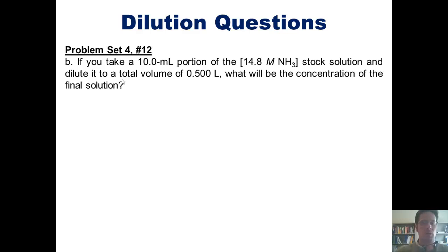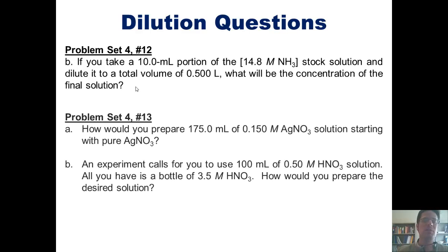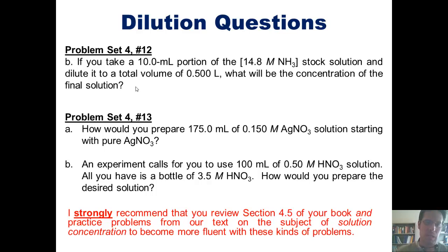This brings us back to our previously mentioned problem: if you took a 10 milliliter portion of a 14.8 molar ammonia stock solution and diluted it to a total volume of 0.5 liters, what would the concentration of the final solution be? Here are some additional practice questions. I won't solve them, but I strongly recommend that you review section 4.5 of our text and practice problems on solution concentration to become more fluent with these kinds of problems.